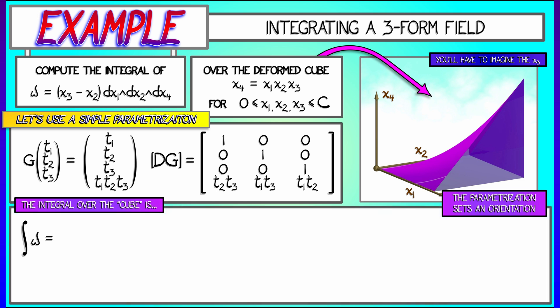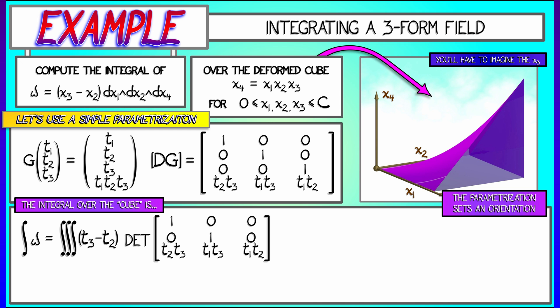Now we're going to integrate the three-form omega over this cube, converting it to a triple integral over these parameters. Omega is (x3 minus x2), which becomes (t3 minus t2), times dx1 wedge dx2 wedge dx4. That eats the three vectors of the derivative and rips out the first row (1, 0, 0), the second row (0, 1, 0), and the fourth row (t2·t3, t1·t3, t1·t2).